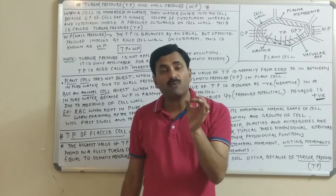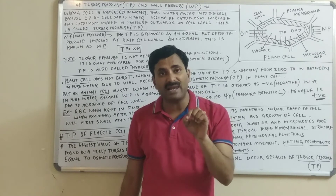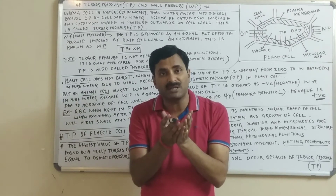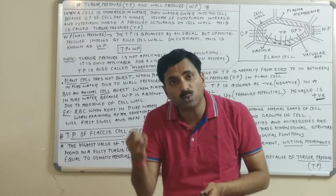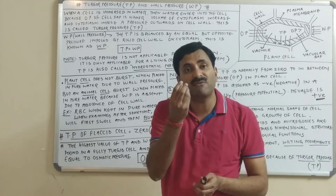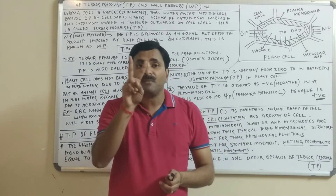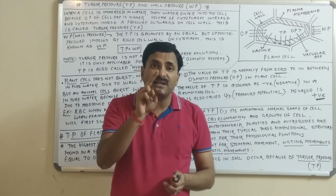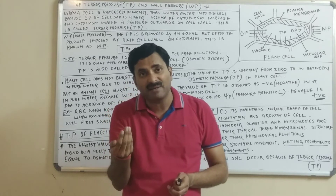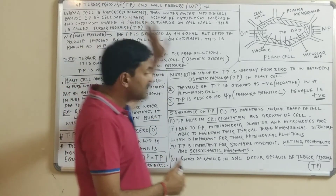Before starting turgor pressure, you must know what a turgid cell is. Whenever water enters inside the cell, the cell becomes swollen — it becomes turgid, and this is called turgidity. Whenever water comes out of the cell, the cell shrinks and is called flaccid. So I will use 'turgid' when water enters and 'flaccid' when water exits the cell.